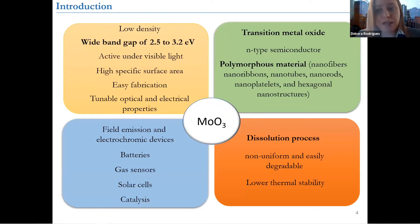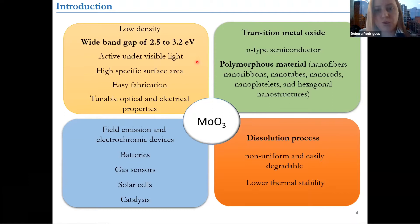So the material that we selected for this type of investigation is actually MoO3. The reason for that is this material is typically easy to fabricate and also has a large wide band gap between 2.5 to 3.0 electron volts. And this material can have different polymorphous structures — they can be nanofibers, nanotubes, nanorods, depending on how you synthesize them.